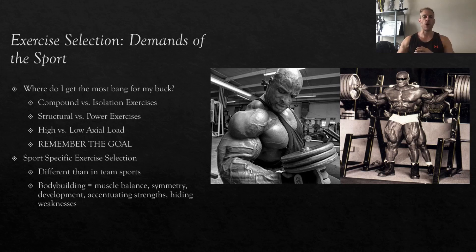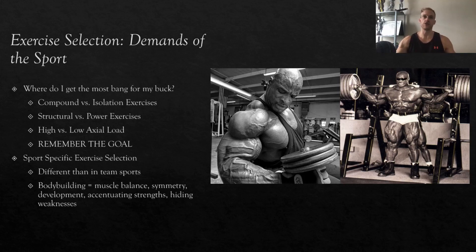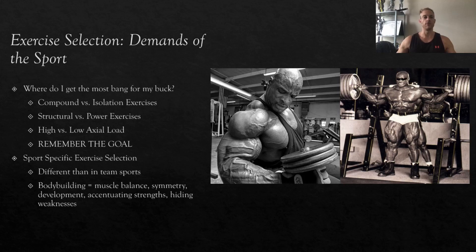Remember the goal: if you want to bring up the quads, arms, whatever it is, choose an exercise you actually feel in that muscle group. Sport-specific exercise selection is a little different — look at performance metrics. A basketball player has a high demand in the vertical force vector; a sprinter has a high demand in the horizontal force vector. A front squat for the basketball player, a hip thrust for the sprinter — stressing the correct musculature at the correct joint angles. With bodybuilding, it's all about muscle balance, symmetry, and development — accentuate strengths and hide weaknesses.